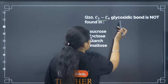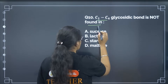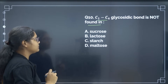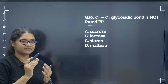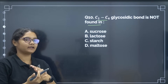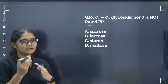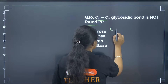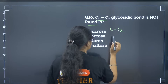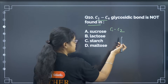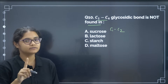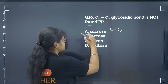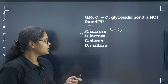C1-C4 glycosidic bond is not found in which compound? This is an important question from disaccharides — you have to remember the linkages. In sucrose it is C1 to C2, not C1 to C4. So the correct answer is option number A.